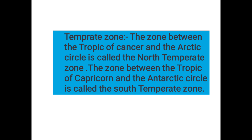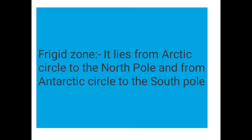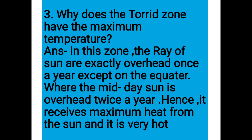The Tropic of Cancer and the Tropic of Capricorn mark the limits of the Torrid Zone. The zone between the Tropic of Cancer and the Arctic Circle is called the North Temperate Zone. The zone between the Tropic of Capricorn and the Antarctic Circle is called the South Temperate Zone. The Frigid Zones lie from the Arctic Circle to the North Pole and from the Antarctic Circle to the South Pole.